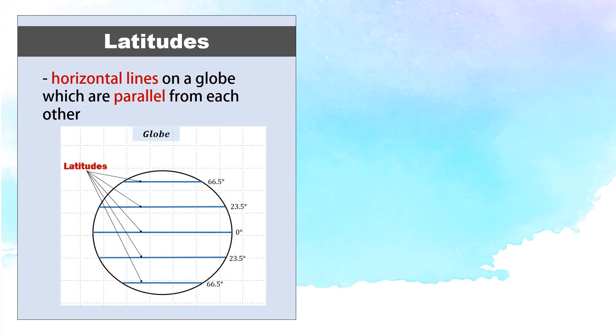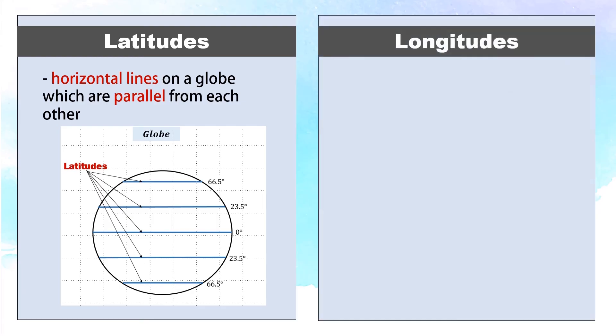Let us sum up. Latitudes are horizontal lines on the globe which are parallel from each other, while longitudes are vertical lines on the globe that meet at the north and south poles.